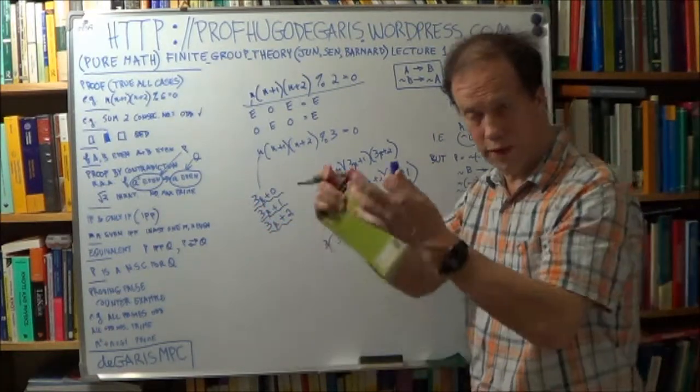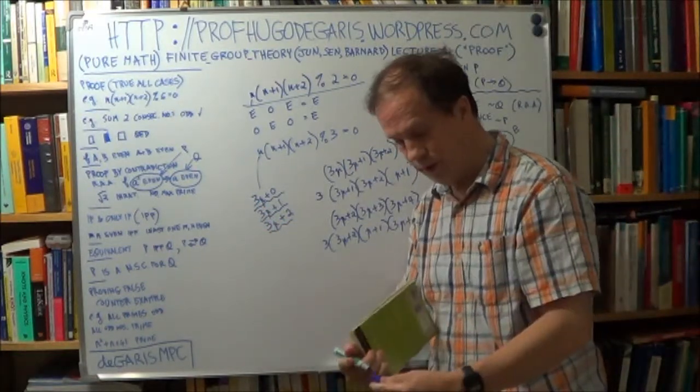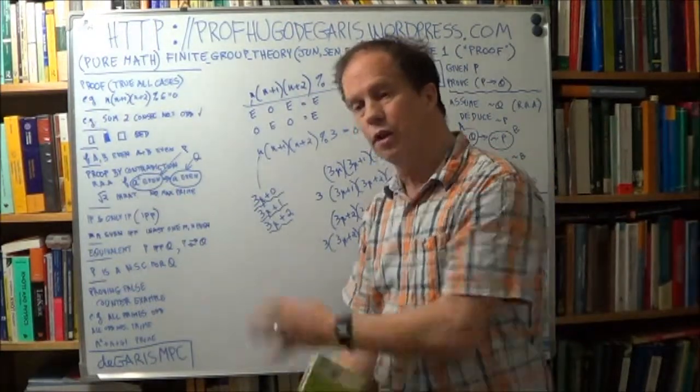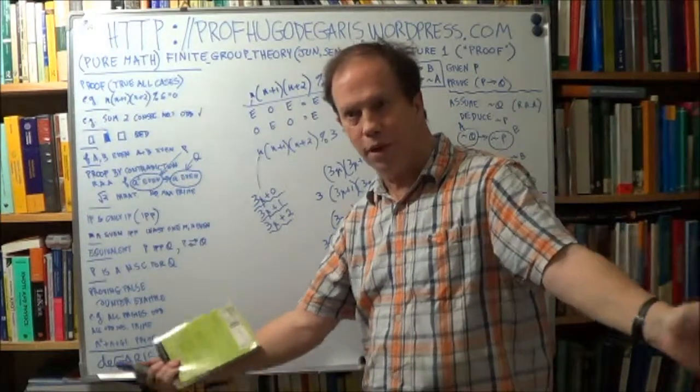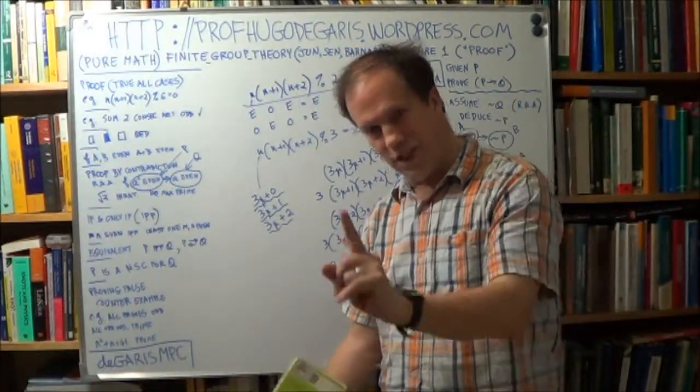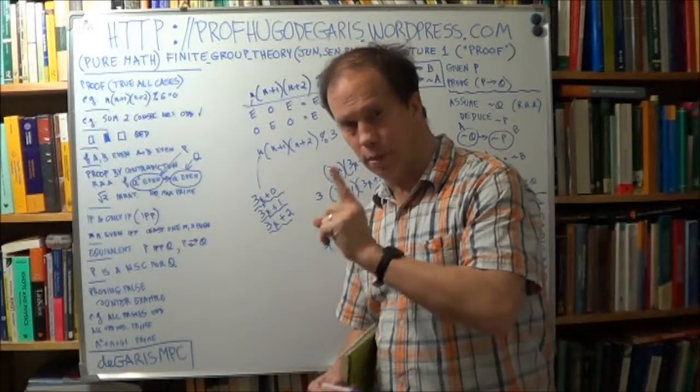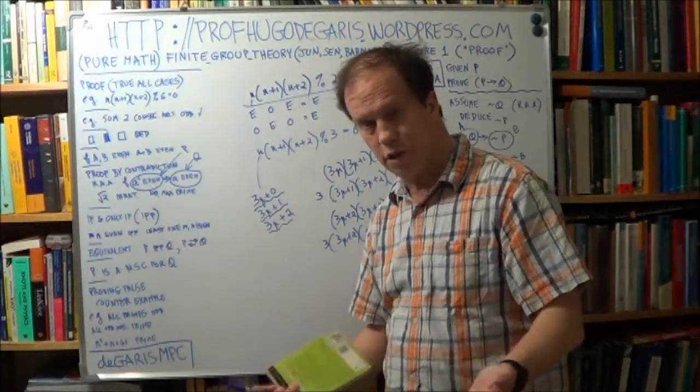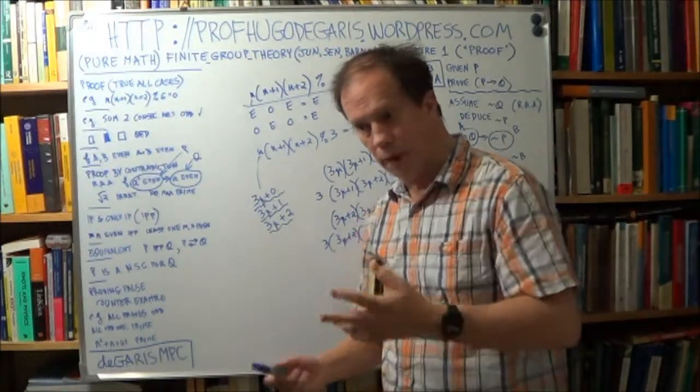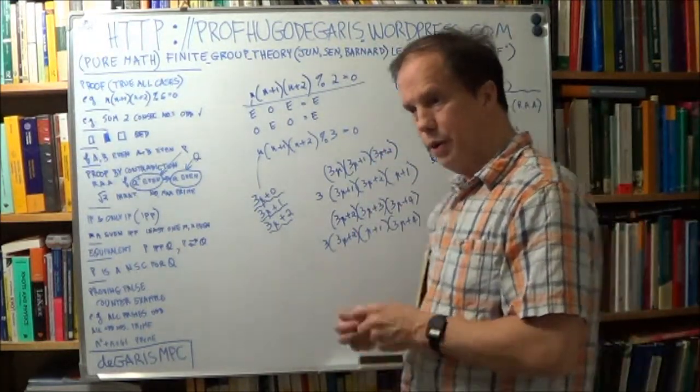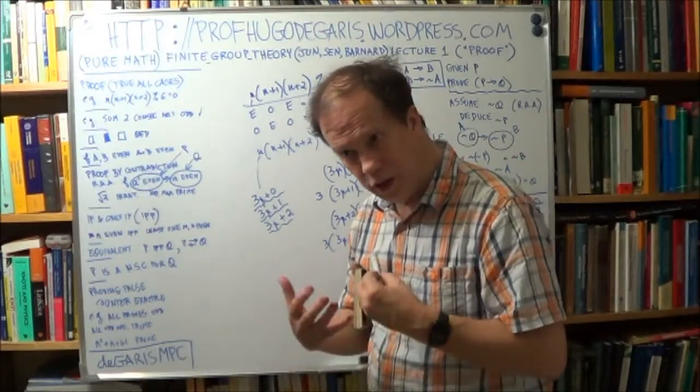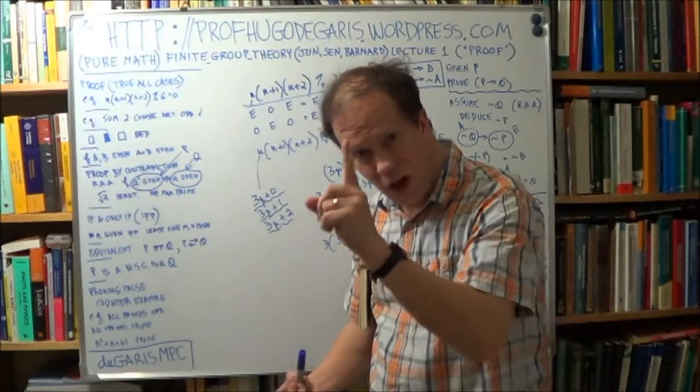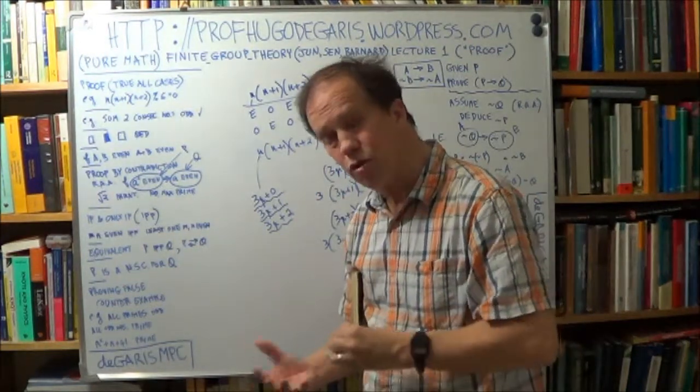So we've done all 3 cases, right? We've covered every case. And a proof has to do that. You have to prove it for all cases. It has to be a general proof. It's not good enough that it's true for 99.9999% of cases. Because if it's just one counterexample, if there's just one example where it's not true, then it's not a proof. You know, it's just false.